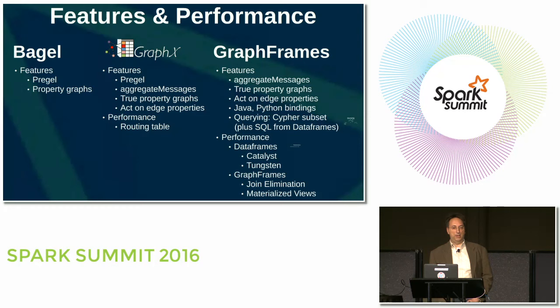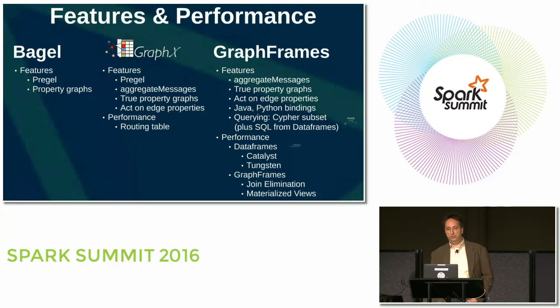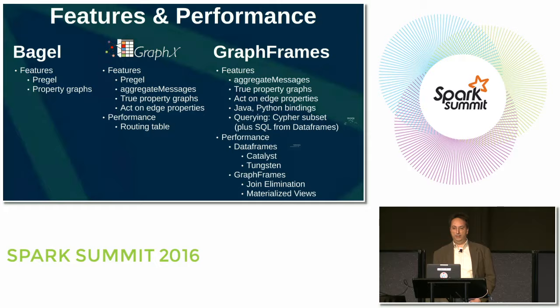Bagel was just a simple Pregel API interface layer. GraphX added a lot more — it added a generalized MapReduce API called AggregateMessages, so you could have more general algorithms with various terminating conditions. In Pregel, you were limited to the terminating condition of there are no more messages being sent. GraphX let you implement algorithms that operated on both vertex properties and edge properties, and it introduced the routing table for rapidly generating tables of triplets. GraphFrames, instead of the routing table, has materialized views. But most of the performance from GraphFrames comes from the fact that it uses data frames, which uses Catalyst and Tungsten. Besides performance, the other two big things GraphFrames adds are the non-Scala languages — Java and Python — as well as querying.